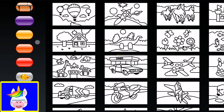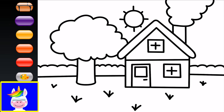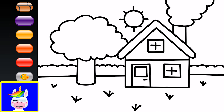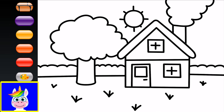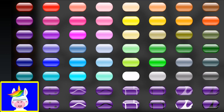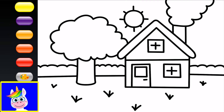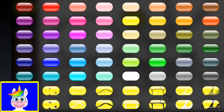Next is a house — a house on grass with a tree and a sun. Let's start with the sun. What color is the sun? Yellow! Sun is yellow and the sky is blue.